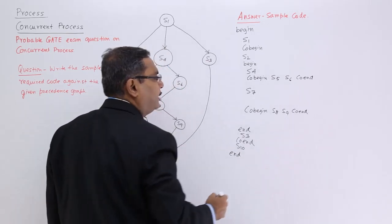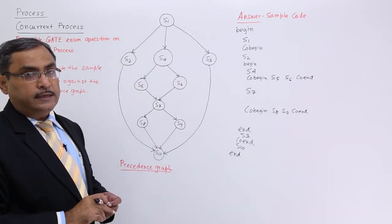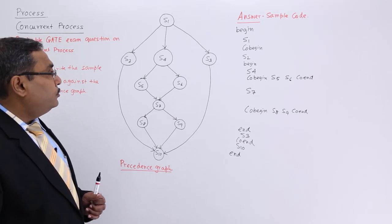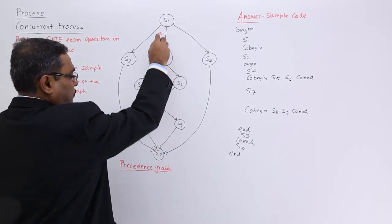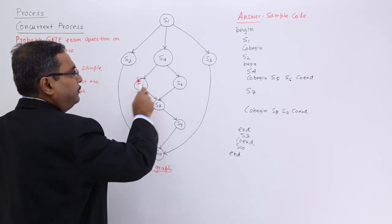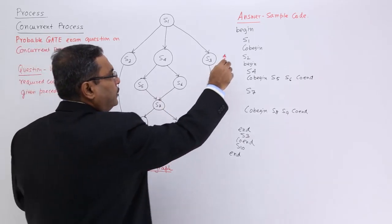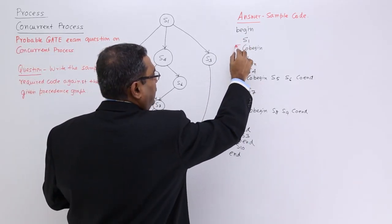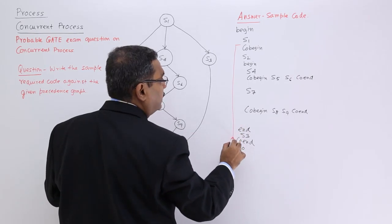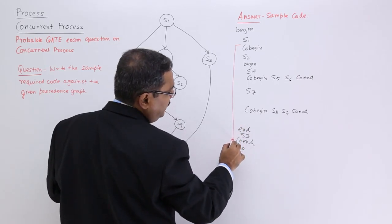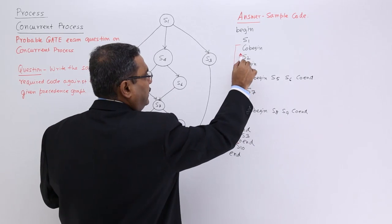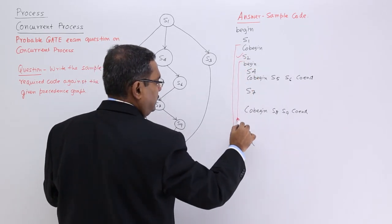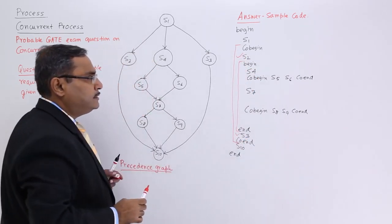So in this way, you can write the sample code. I think the thing is clear to you. We are having S1 and S10, and in between three components will be in parallel. So this is my co-begin and this is my co-end. This is one component, this is another component and this is the third component.